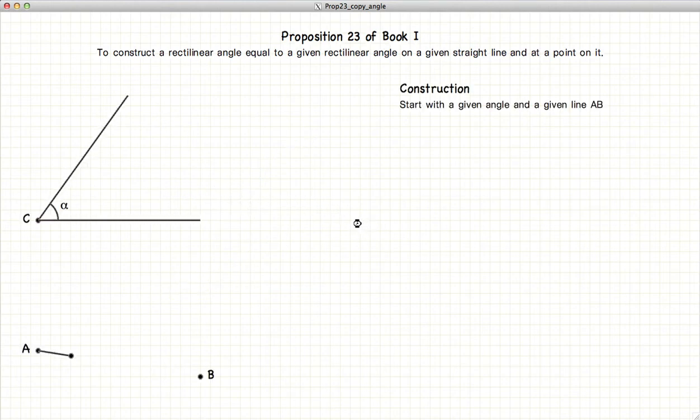So let's start with our given angle alpha and our line segment AB, and our goal is to copy alpha onto the point A.